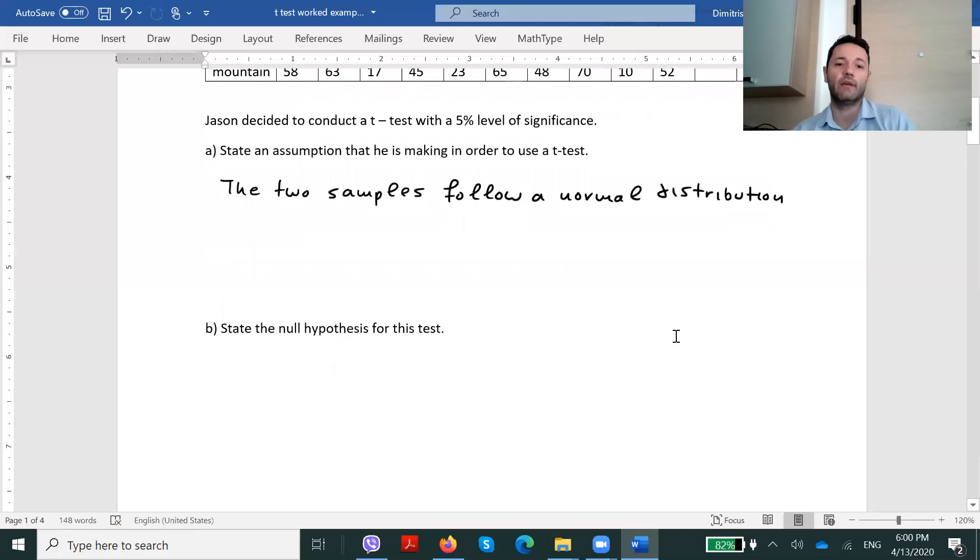Let's move on to question B. State the null hypothesis for this test. The null hypothesis in a t-test is always the one that states that the means of these two samples are equal. So, if μ1 is the mean of the first sample of the people living close to the sea, and μ2 is the mean of the second sample of those who live close to the mountain, then we assume that the means of these two samples are equal. And that is always our null hypothesis.